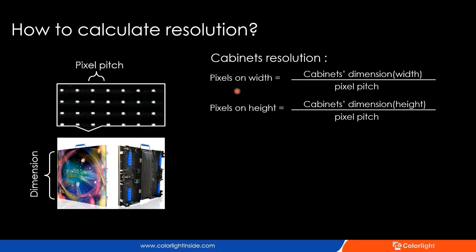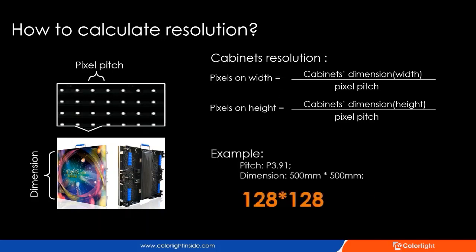Pixel pitch is the distance from one LED to the next LED. The unit is millimetres. When the cabinet dimension is divided by the pixel pitch, we can easily calculate how many pixels are on the width and height. For example, there is a P3.9 cabinet, which is widely used in rental projects. The size is 500 by 500 millimetres. After calculating, we get the resolution: 128 by 128.